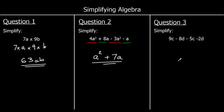Question 3: we've got c terms and d terms, always taking the sign from in front of the term. For c: 9c take away 5c — 9 take away 5 is 4 — so 4c. For d: negative 8 take away 2 — negative 8 take away 2 is negative 10 — so negative 10d. The answer is 4c take away 10d.